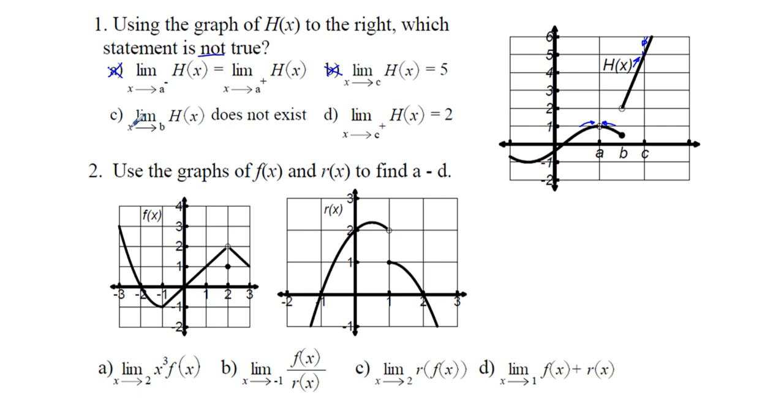Now c, the limit as x approaches b of h of x does not exist. Well here, for b, we have the left-hand limit approaching this like 0.5, and the right-hand limit is approaching 2. So the limit as x approaches b from the left-hand side of h of x equals 0.5, and as x approaches b from the right-hand side of h of x is 2. Is that true? No, because 0.5 is not equal to 2. The left-hand and right-hand side limit are not equal. So which one is not true? I think c has to be our correct answer.